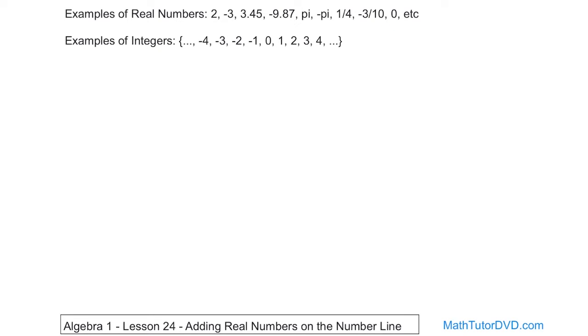Basically, a real number — anytime you see somebody talk about real numbers — it means any number you can dream of: positive, negative, or 0, including fractions and decimals. Basically anything except an imaginary number, which we'll talk about later.